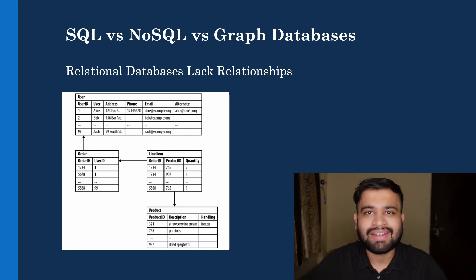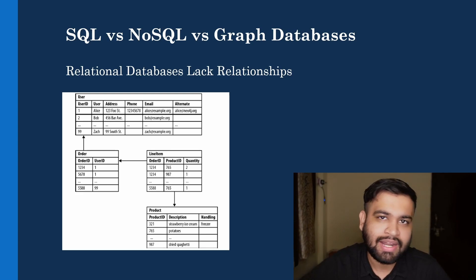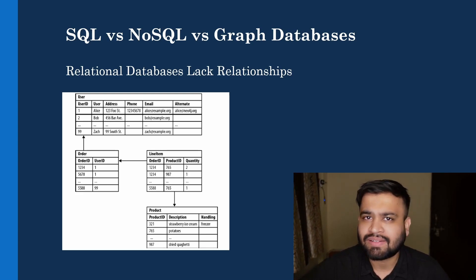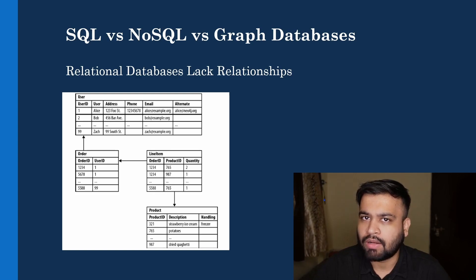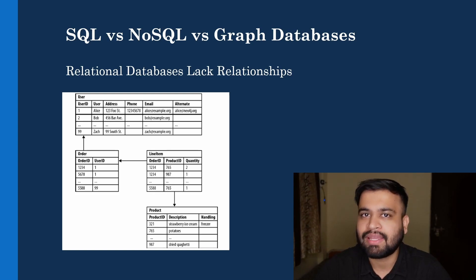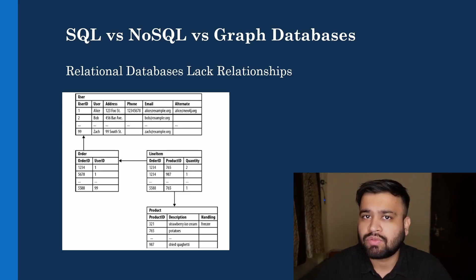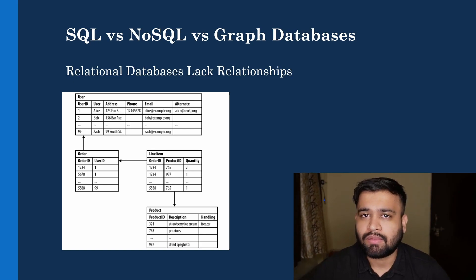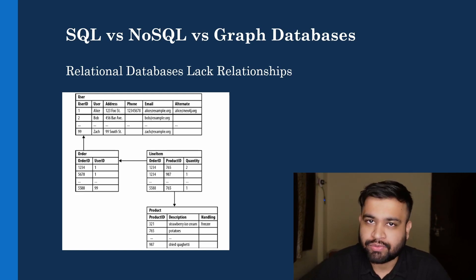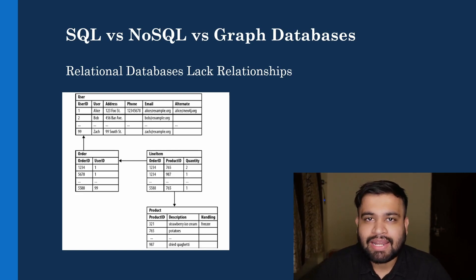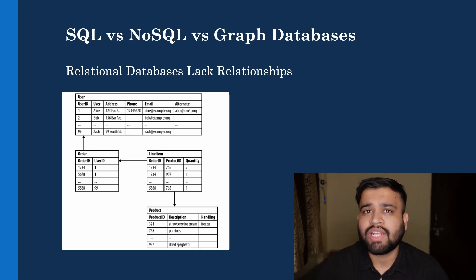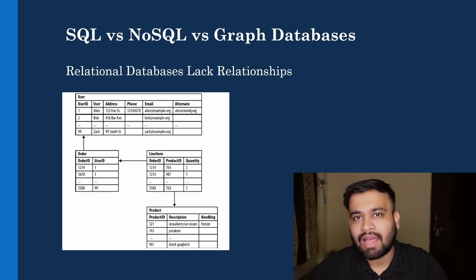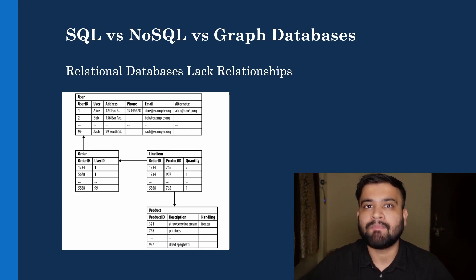If you need to analyze data stored in relational databases, the transactional capabilities are great. But when you want to build an analytics platform on top of it, it struggles. Submitting heavy, intensive join queries across tables containing millions of records will cause performance issues. That is why relational databases are not suitable to incorporate relationships the way graph databases do, because graph databases embrace relationships.